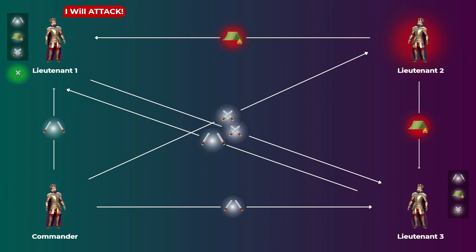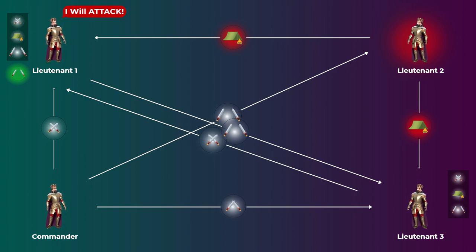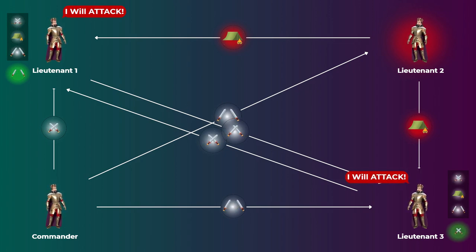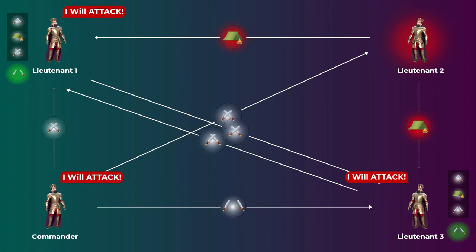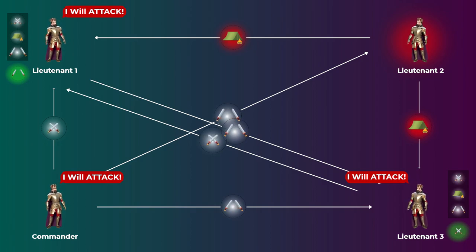So he will take the majority vote and decide to attack with lieutenant three and the commander. The situation is the same from the perspective of lieutenant three — he also got two attack messages and one retreat message, so he will also decide to attack. In this example, the commander is loyal, so he should attack at the same time with his generals. At the end, the commander and the two loyal lieutenants all attacked, so the one traitor could not prevent them from reaching agreement on the attack decision.